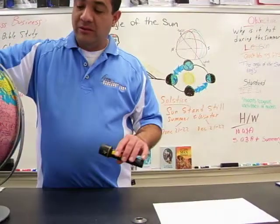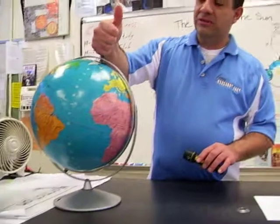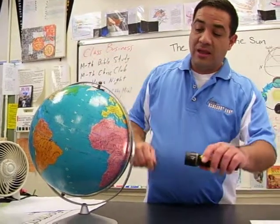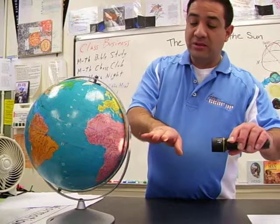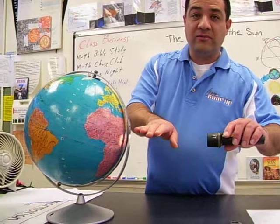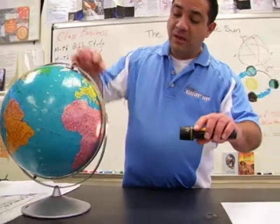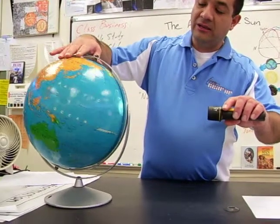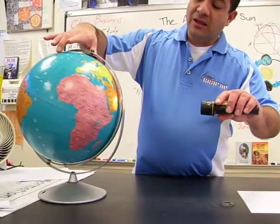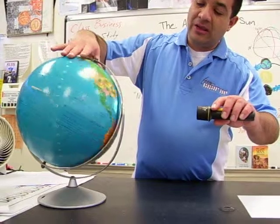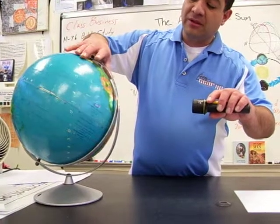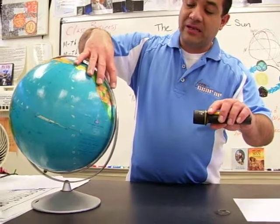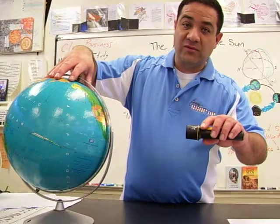Three months later, notice that the pole is still at a 23.5 degree tilt, and the sun — which is 93 million miles away, or 150 million kilometers away — as the Earth orbits, the Northern Hemisphere now experiences direct sunlight, thus giving the Northern Hemisphere its summer.